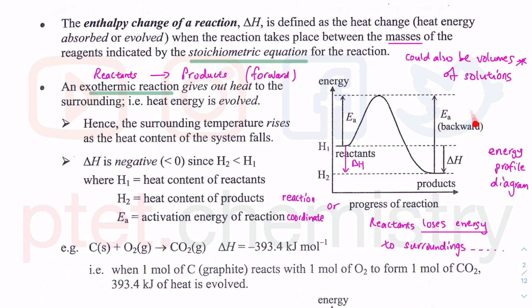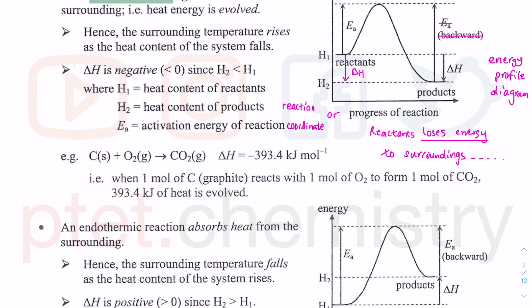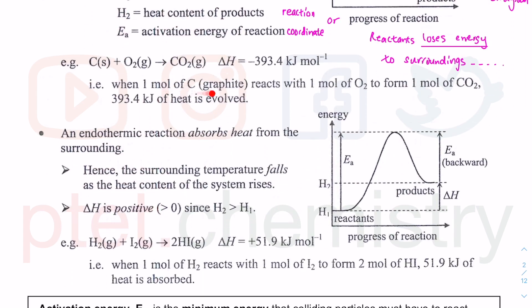There is also something called the backward reaction — products to reactants — which will become more important when we cover reversible changes later. By default, we are referring to the forward reaction: reactant to product, left to right. The enthalpy change is negative because H₂ minus H₁ gives a negative value since H₂ is lower than H₁. An example of an exothermic reaction is combustion — the enthalpy of combustion is always exothermic, always releasing heat energy to the surrounding.